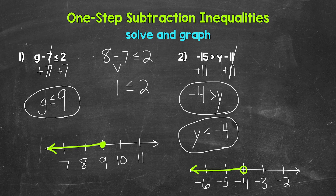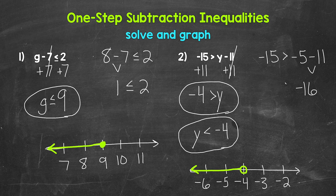Let's check a solution by plugging it into the original inequality. We need any value less than negative 4 — let's use negative 5. So negative 15 is greater than negative 5 minus 11. Negative 5 minus 11 gives us negative 16. Negative 15 is greater than negative 16 — so that works. We are correct. Y is less than negative 4. Any value less than negative 4 is a solution. There's how to solve and graph addition and subtraction inequalities.